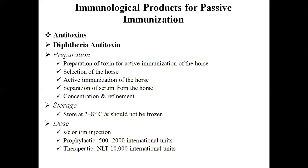Diphtheria antitoxin has a potency of not less than 1000 international units per ml for antitoxin obtained from horse serum, and not less than 500 international units per ml for antitoxin from other animals. Storage must be at 2–8°C and it should not be frozen. The dose is given by subcutaneous or intramuscular injection: 500 to 2000 international units for prophylactic cases, and not less than 10,000 international units for therapeutic cases. The next class will discuss tetanus antitoxin.